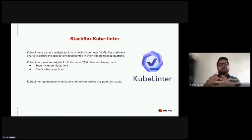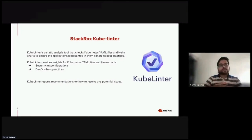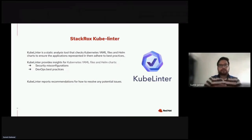StackRox exposes KubeLinter as a tool — a static analysis tool that checks Kubernetes YAML files and Helm charts to ensure the applications represented in them adhere to best practices. It analyzes Kubernetes YAML and checks them against a variety of best practices with a focus on production readiness and security. KubeLinter is configurable: you can enable and disable checks, and you can create custom checks, because rules may differ from company to company. KubeLinter also provides recommendations whenever there is a failure in the lint check.